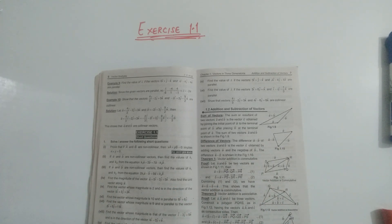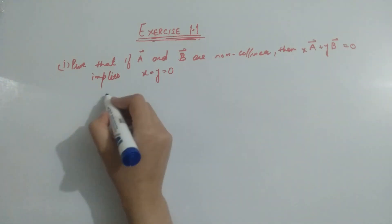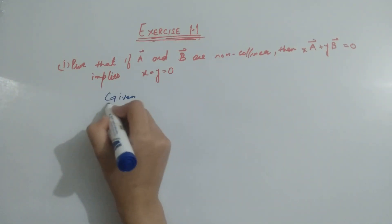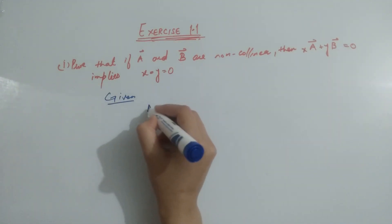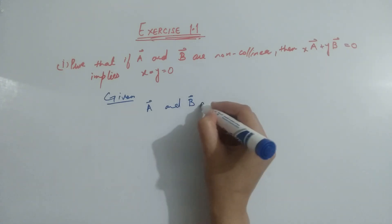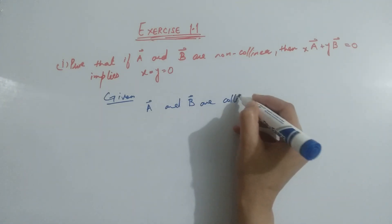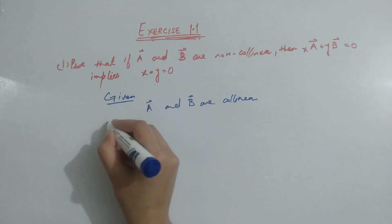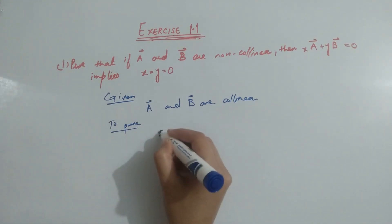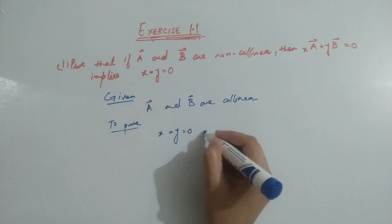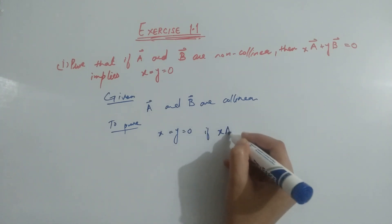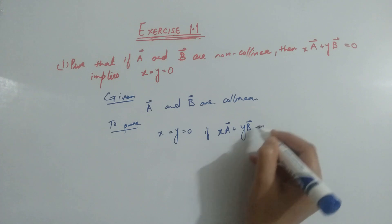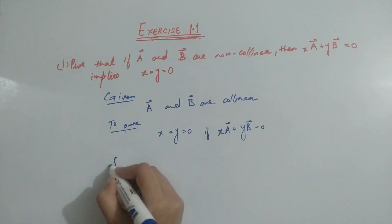Welcome learners. Today we are going to solve Exercise 1.1, but before doing this, keep in mind the introduction of this chapter. In this question, the given things are two vectors A and B. A and B are collinear. We have to prove that x equals y equals 0, if xA plus yB equals 0.